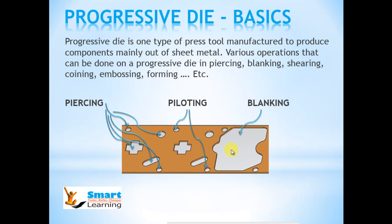You might be wondering what is the difference between piercing and blanking. In piercing, the slug coming out of the stroke is waste. We won't use it. It's a scrap. But the sheet metal component coming out of blanking is the actual component which we need.